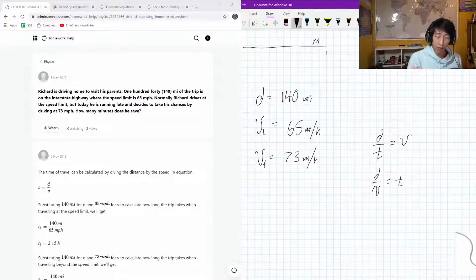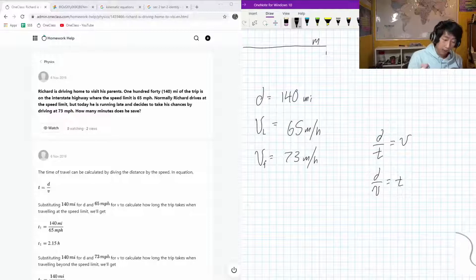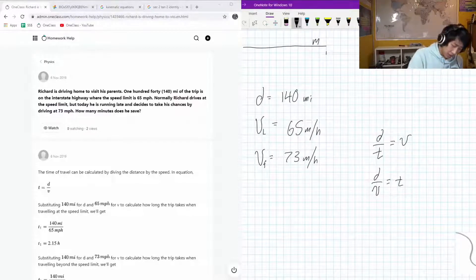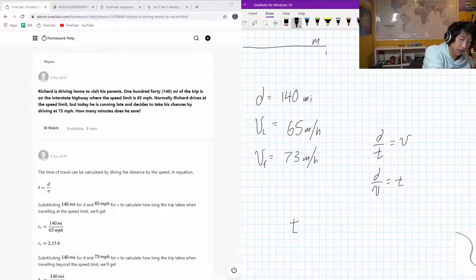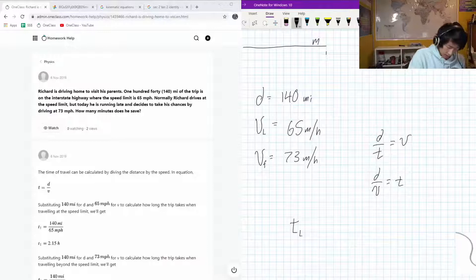We're looking for the time difference between our fast and our slow, but they're going to have the same distance overall. So to set up that difference in time, what we can do here is our time of our limit minus the time of our fast.